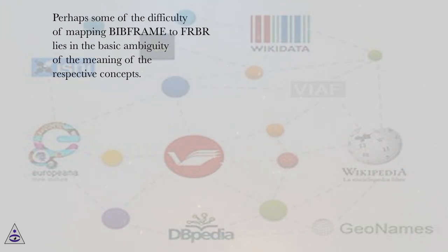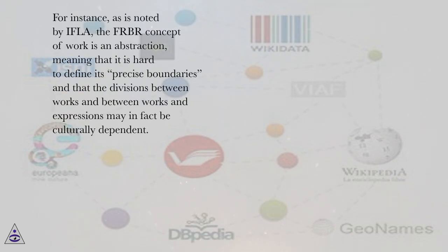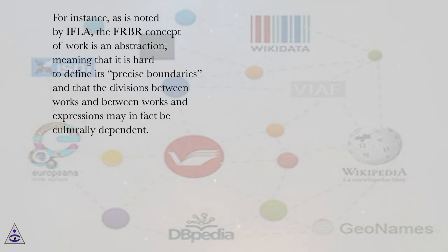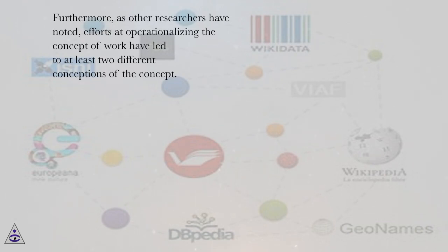Perhaps some of the difficulty of mapping BIBFRAME to FRBR lies in the basic ambiguity of the meaning of the respective concepts. For instance, as is noted by IFLA, the FRBR concept of work is an abstraction, meaning that it is hard to define its precise boundaries and that the divisions between works and between works and expressions may in fact be culturally dependent. Furthermore, as other researchers have noted, efforts at operationalizing the concept of work have led to at least two different conceptions of the concept.